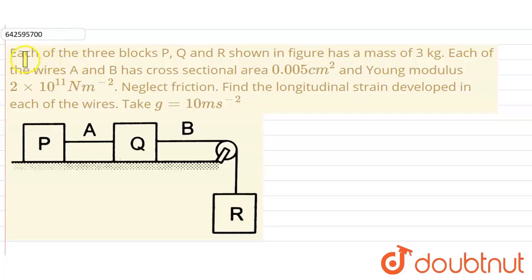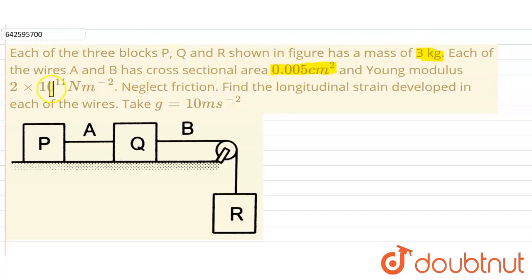Hello everyone. Our question is: each of the three blocks P, Q, R shown in the figure has a mass of 3 kg. Each of the wires A and B has a cross-sectional area of 0.05 cm² and Young's modulus 2×10¹¹ Nm⁻². Neglect friction. Find the longitudinal strain developed in each wire. Take g = 10 m/s².